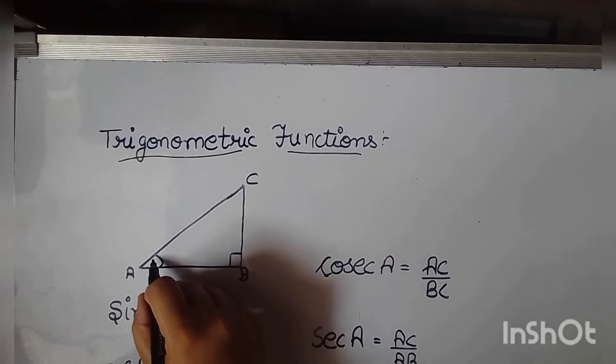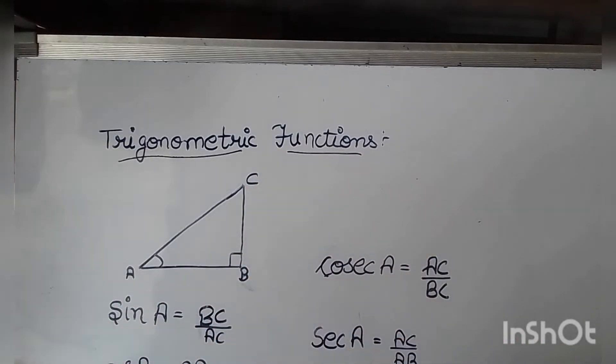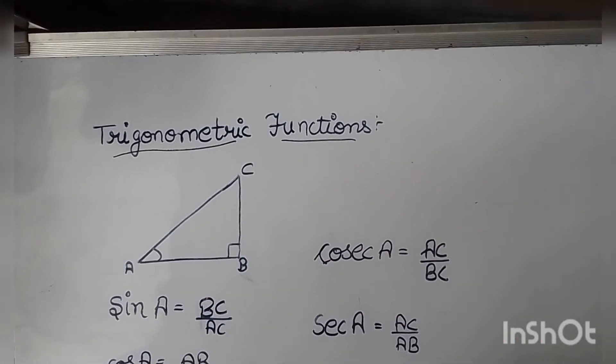Now for angle A, AB is the base and BC is the perpendicular. We discuss about trigonometric functions.